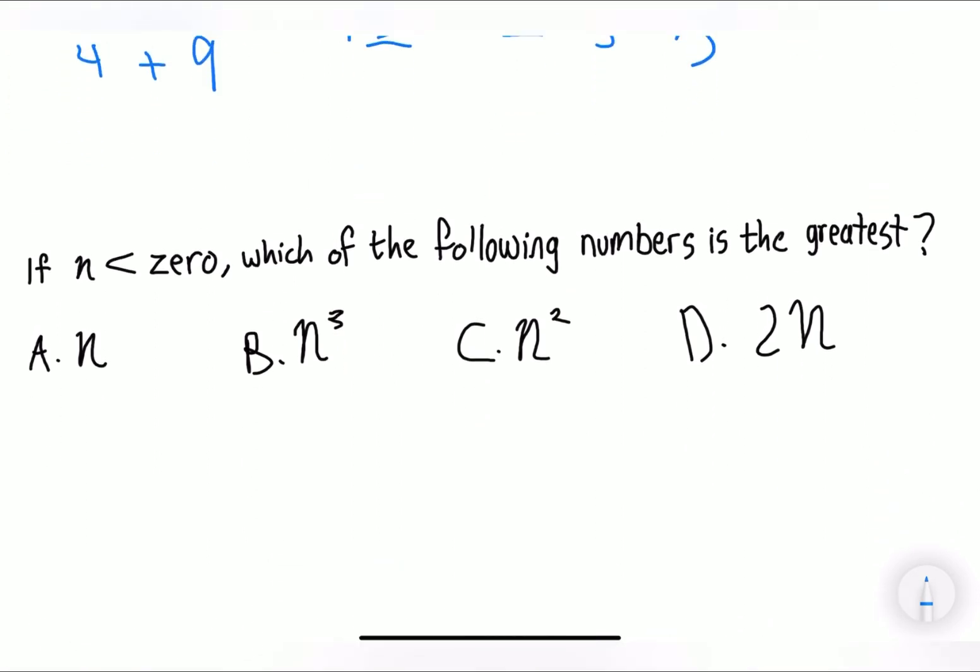Okay, so before I jump right into the problem, I want to give you a minute to solve it. So take a minute. Pause the video. So, it's saying that if N is less than 0, which of the following numbers is the greatest?